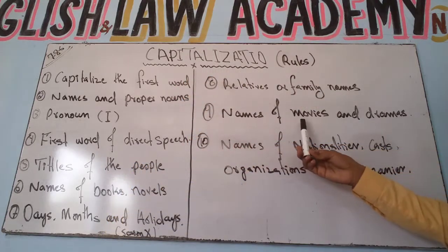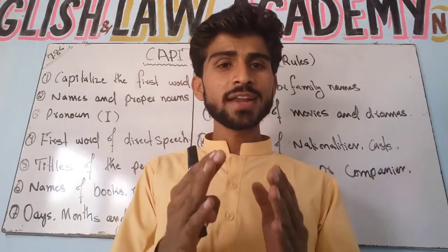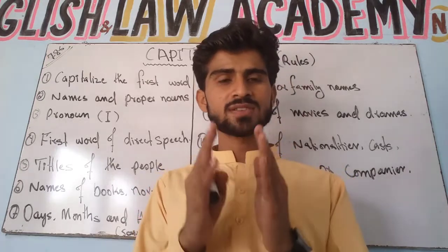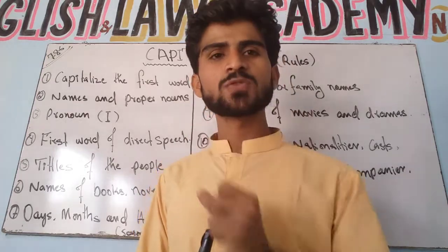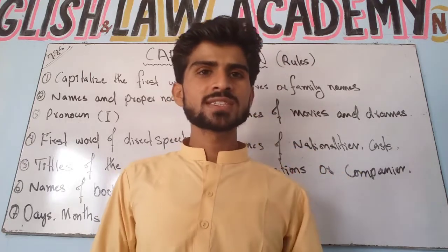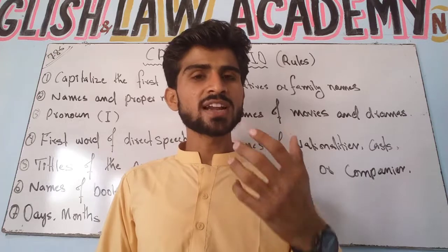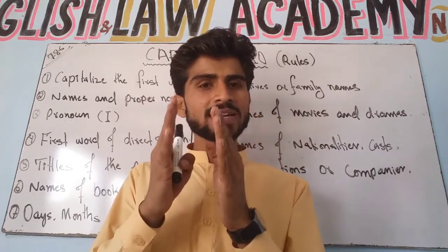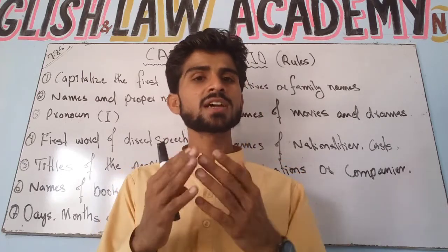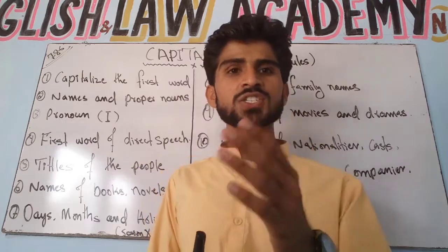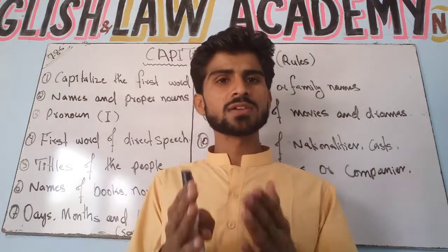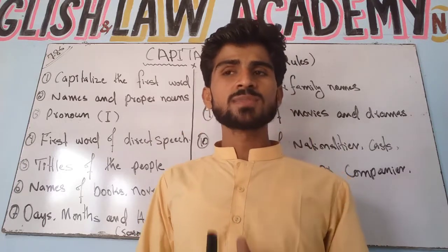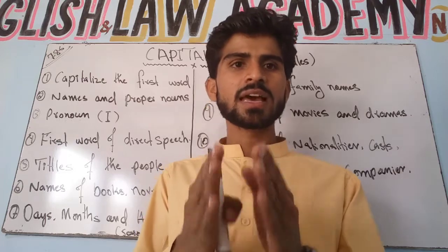Rule nine: names of movies and dramas. Whenever you write the names of dramas or movies, you must write the first letter in capital form. For example, the movie Van Helsing — the V must be capital. Or dramas like Meri Aash Ki Tum Se Hai — if written, the first letter of the title must be in capital form.